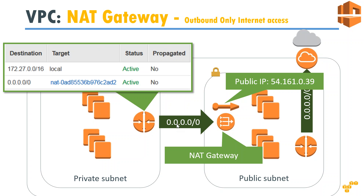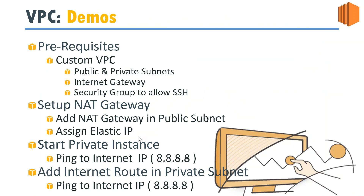Once that's done, all private instances on the left will be able to talk to the internet through the NAT gateway. Here is a quick summary of what we'll demo: set up a custom VPC with security groups, set up a NAT gateway in the public subnet with an elastic IP, start a private instance and ping the internet. We'll enable ICMP in the security group — someone asked yesterday how to do a ping — and the ping should initially fail, then start working once we configure the NAT gateway route. Let's go to the console right away.